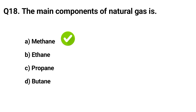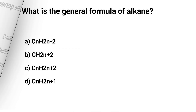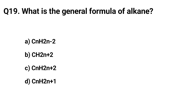Question number 19. What is the general formula of alkane? The correct answer of that question is option C: CnH2n+2.